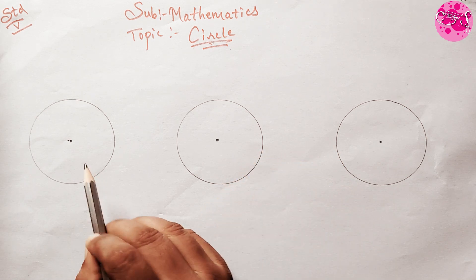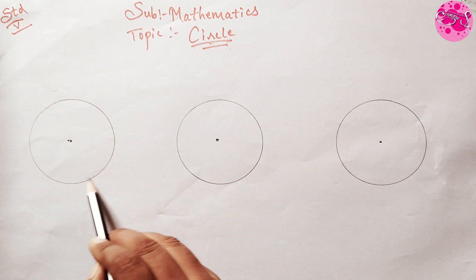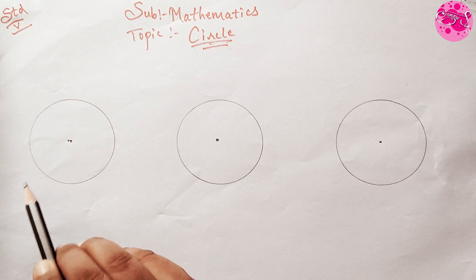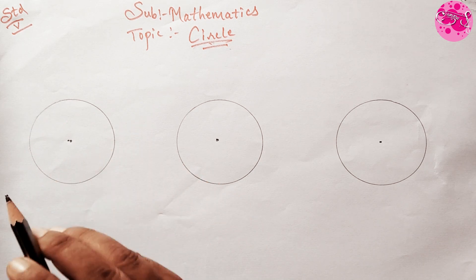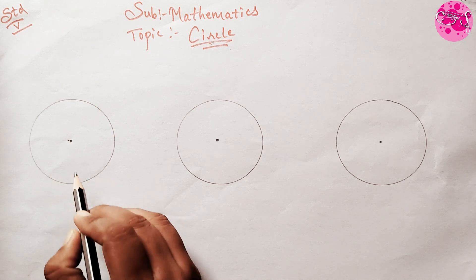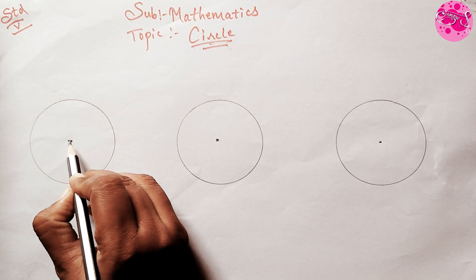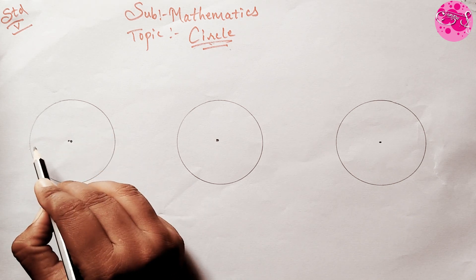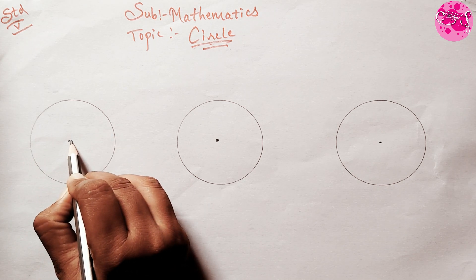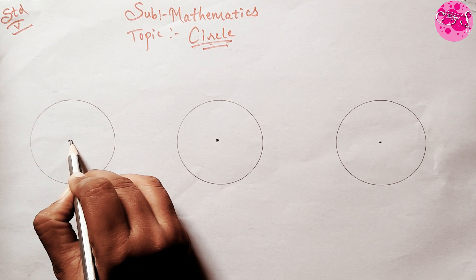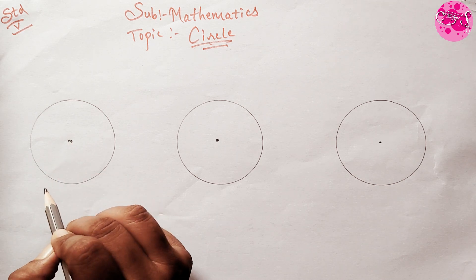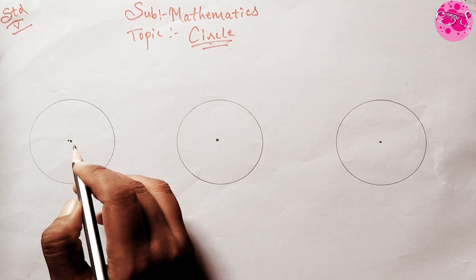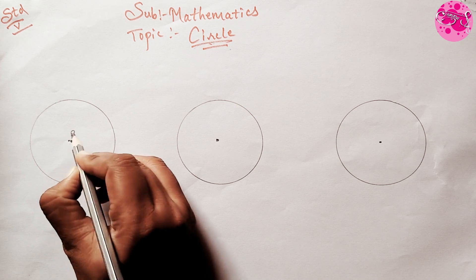Before learning how to draw a circle, I just want to tell you all the main important points of the circle. So here I have drawn one circle for you. The midpoint is the point where we are drawing the circle — it is the midpoint of the circle. I'm giving the name P to that midpoint.